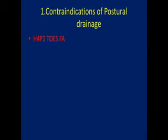Let's see the first one: contraindications of postural drainage. The mnemonic is H raised to 4, P square, TOES and FA. So that is 4 times H, 2 times P, TOES (T-O-E-S) and FA.